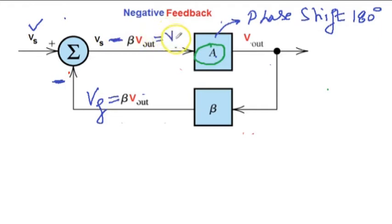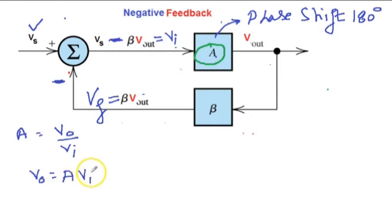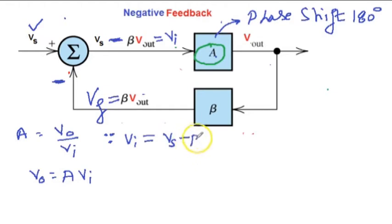We are writing the gain A of the amplifier as V0 upon VI. This is just the amplifier gain, so V0 is A times VI. Now VI is VS minus beta times Vout. Substituting VI in this expression, V0 becomes A times (VS minus beta Vout).